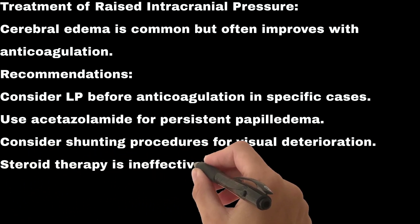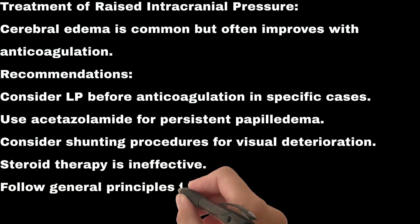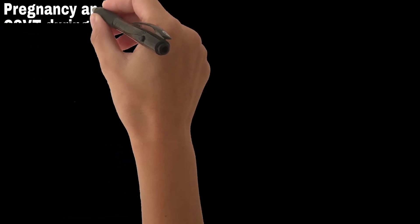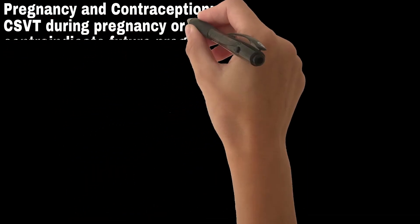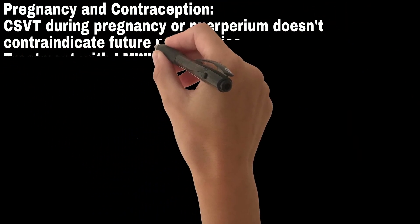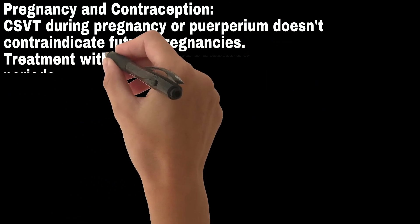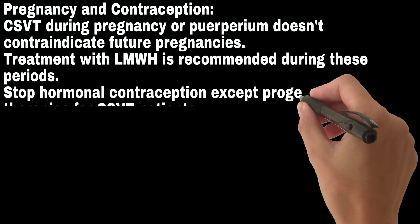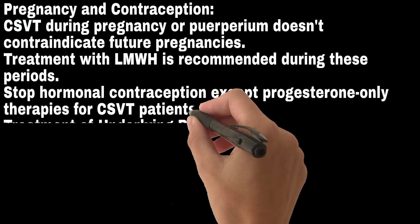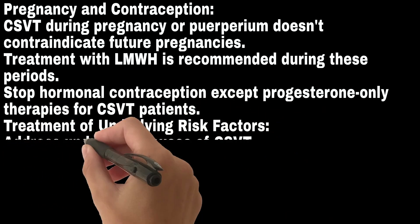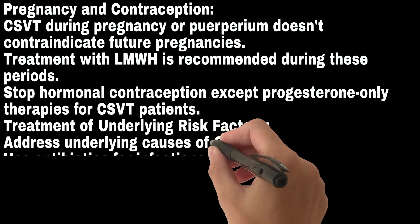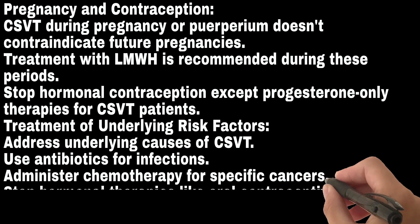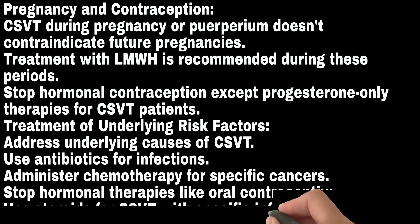For raised intracranial pressure, acetazolamide is used for persistent papilledema, shunting procedures may be considered for visual deterioration, and steroid therapy is ineffective. For pregnancy and puerperium, CSVT does not contraindicate future pregnancies; LMWH is recommended during these periods and hormonal contraception except progesterone-only therapies should be stopped. Treatment of underlying risk factors includes antibiotics for infections, chemotherapy for specific cancers, stopping hormonal therapies like oral contraceptive pills, and steroids for CSVT with specific inflammatory diseases.